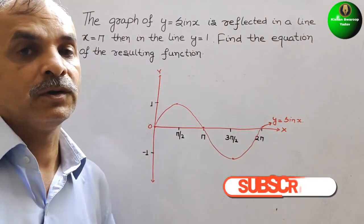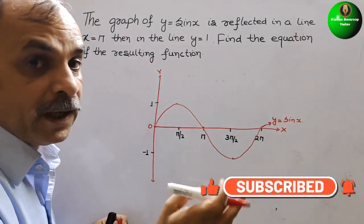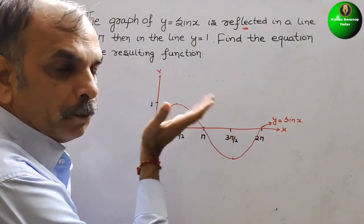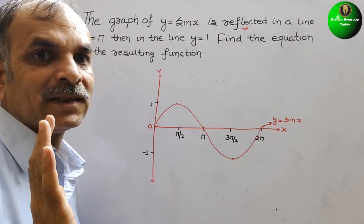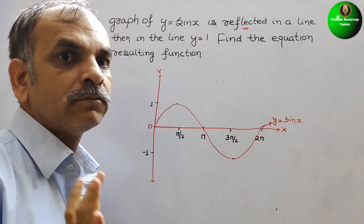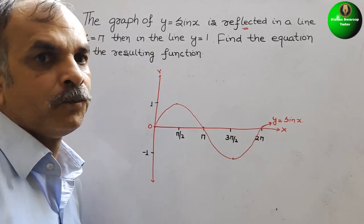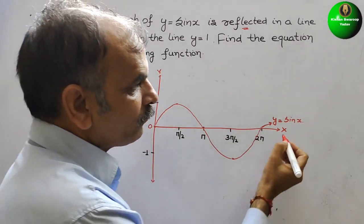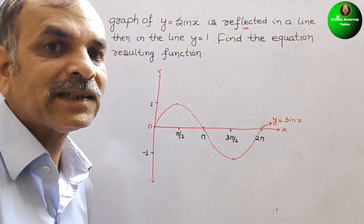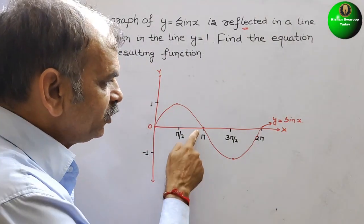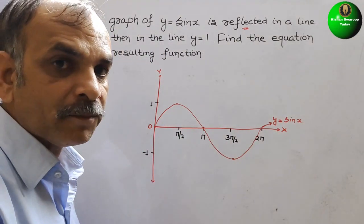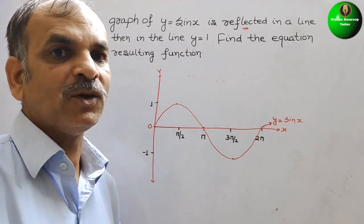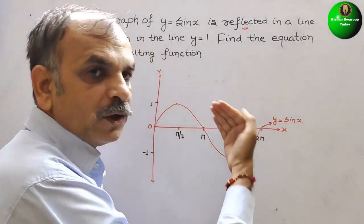Now what they have told us? We have to reflect it. Reflect means just keep a mirror — positive will go into negative. They have given x equals pi, so if you put the value of pi: sin pi is 0. That means y is 0, which is on the x-axis only. That means here only we have to reflect it.